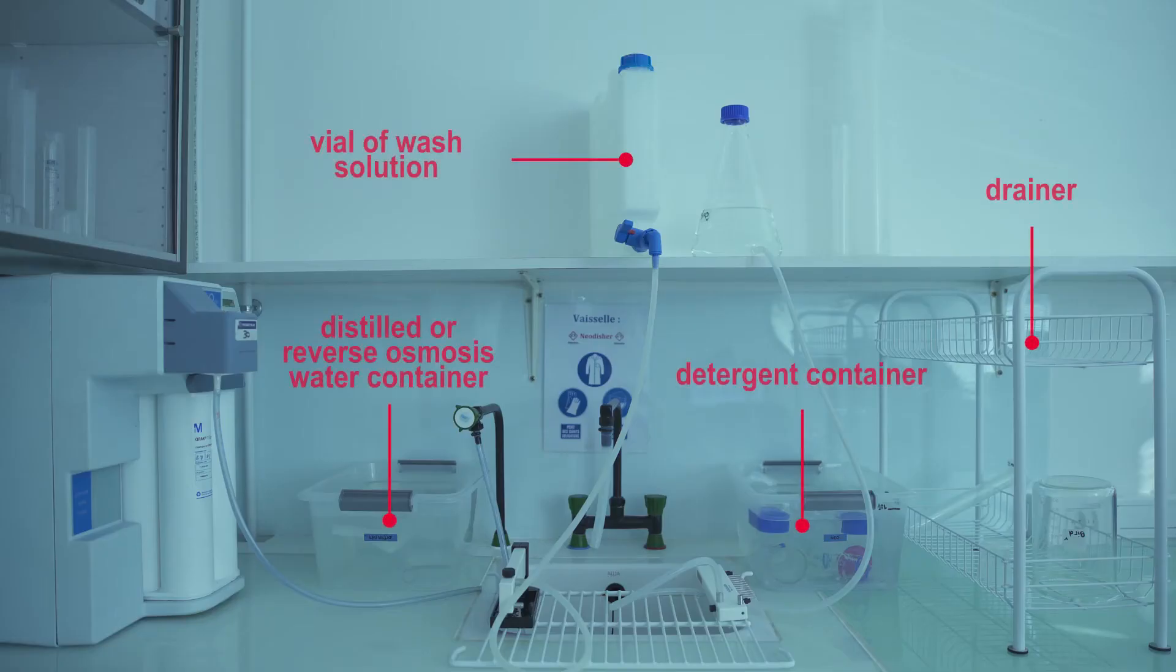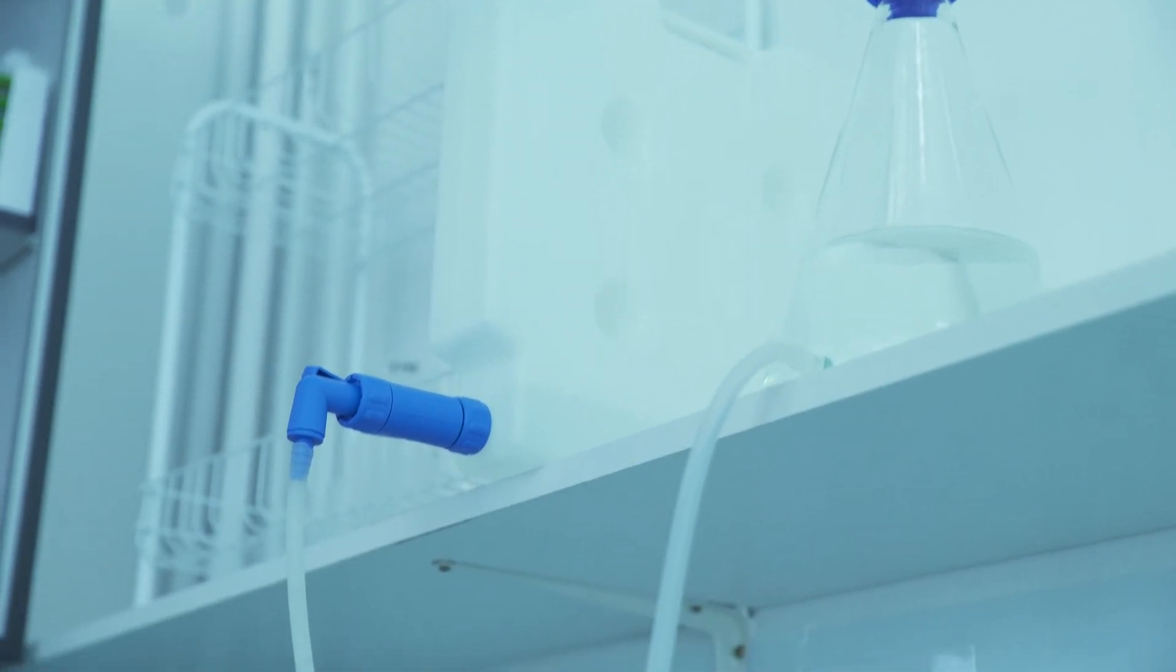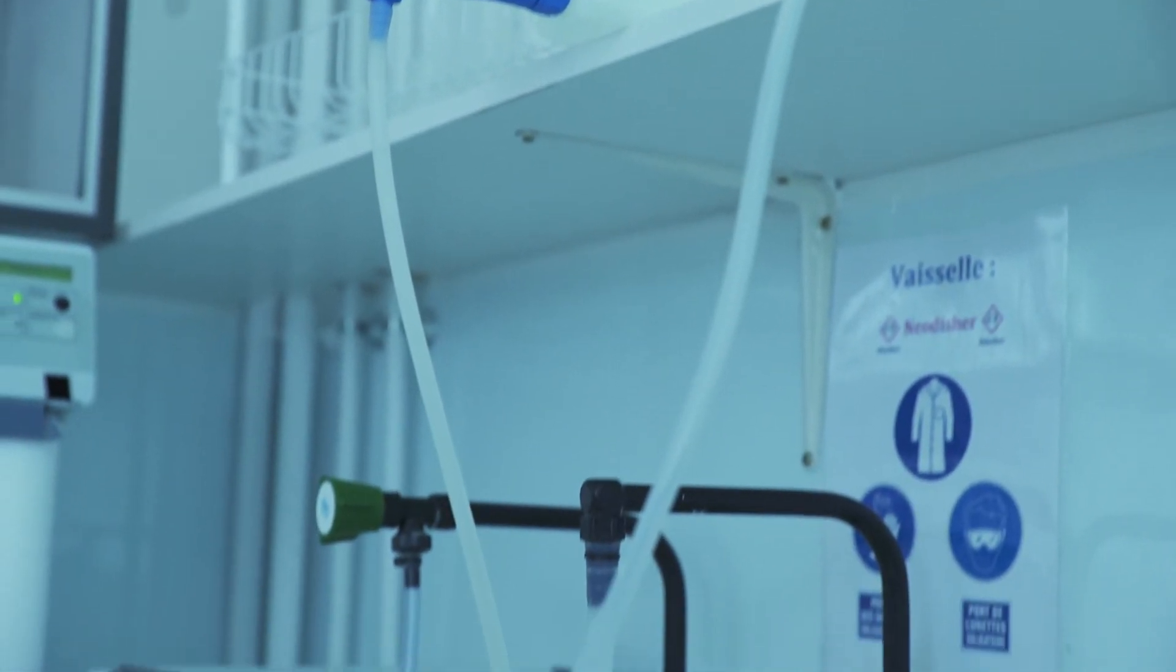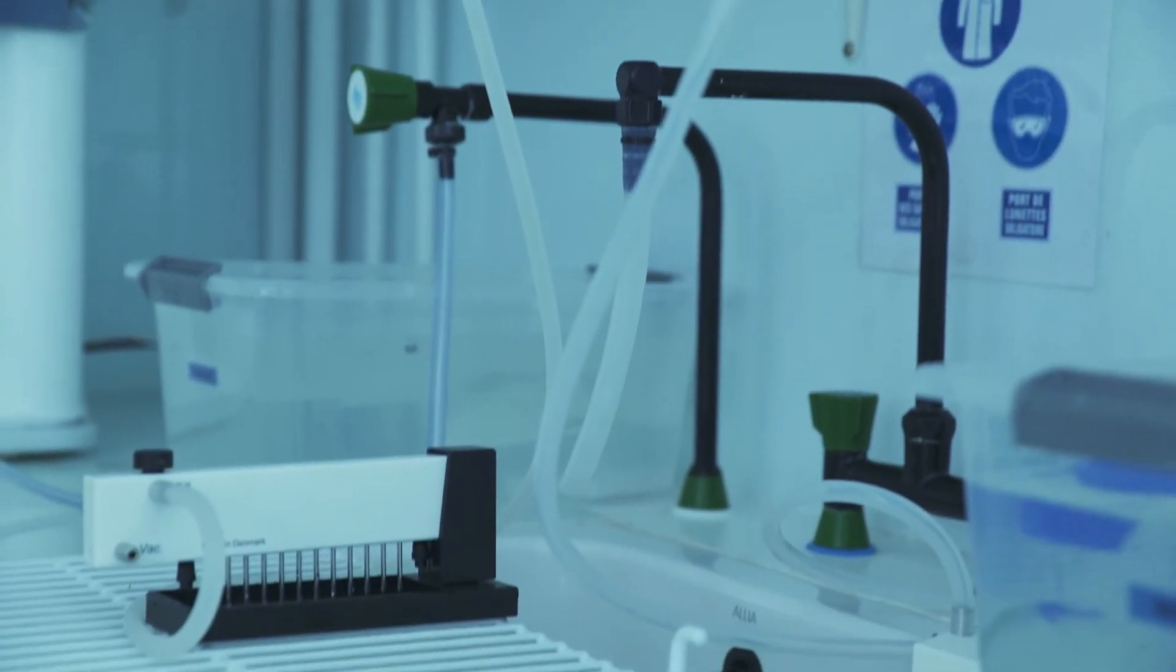Here's the basic equipment you will need for your wash bay. For plate washing, if you opt for the semi-automatic system, make sure you have a vial of wash solution. It should be raised to allow the wash solution to flow by gravity. It should not be tightly closed.